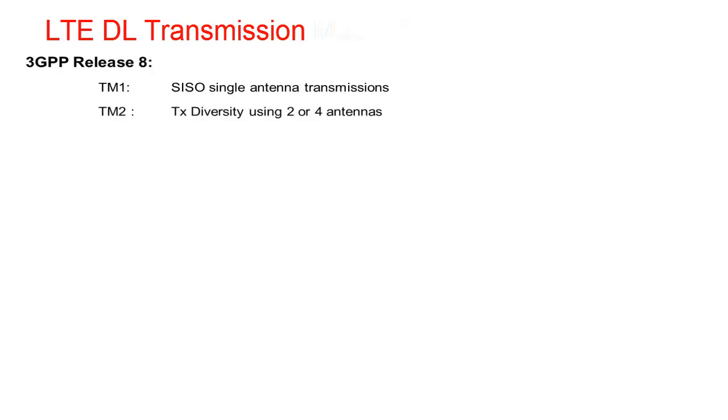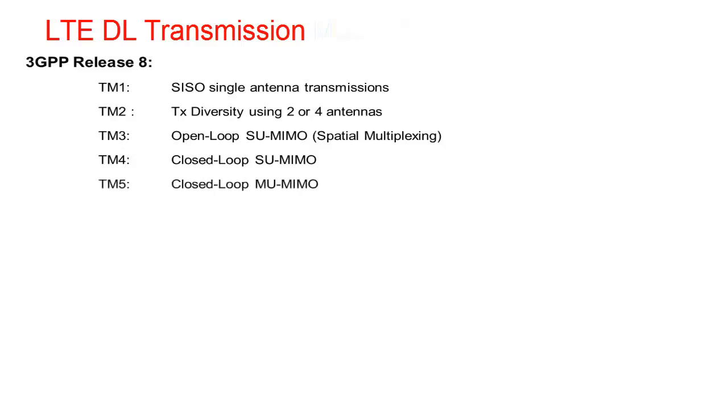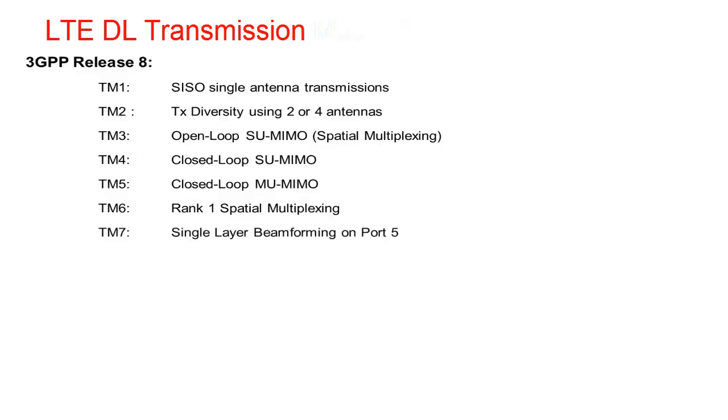Let's focus on how beamforming and spatial multiplexing are used within 3GPP LTE. LTE defines many downlink transmission modes, which we will only briefly summarize here. Release 8 defines transmission modes 1 through 7, covering SISO, transmit diversity, open-loop single-user MIMO, closed-loop single-user MIMO, closed-loop multi-user MIMO, rank 1 spatial multiplexing, and single-layer beamforming on port 5.